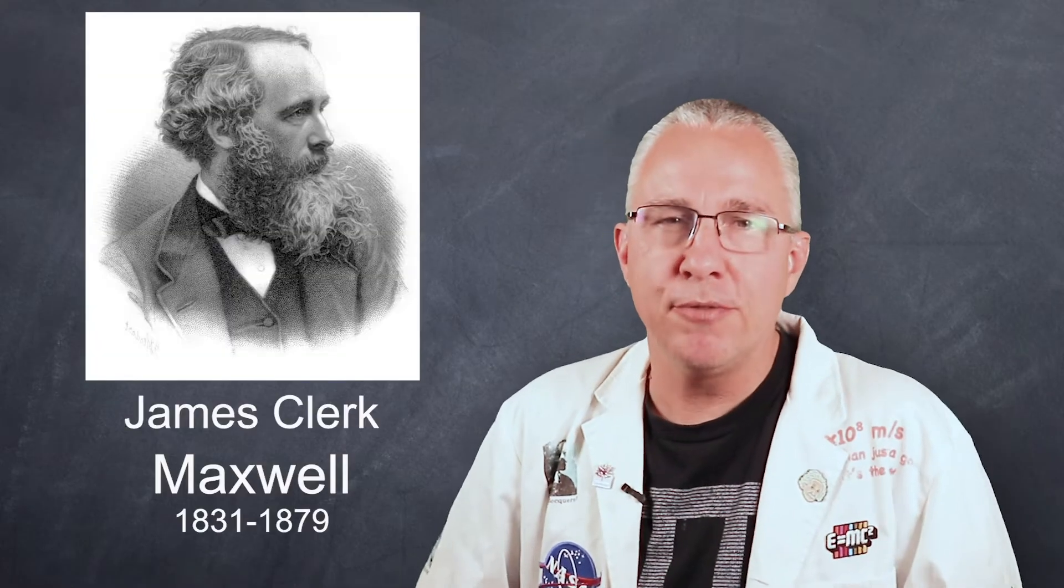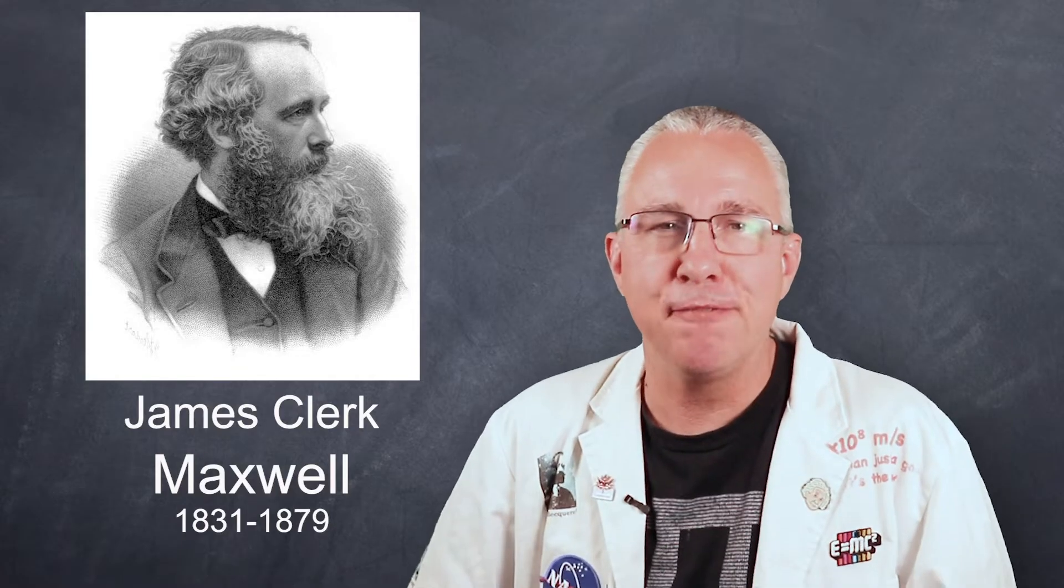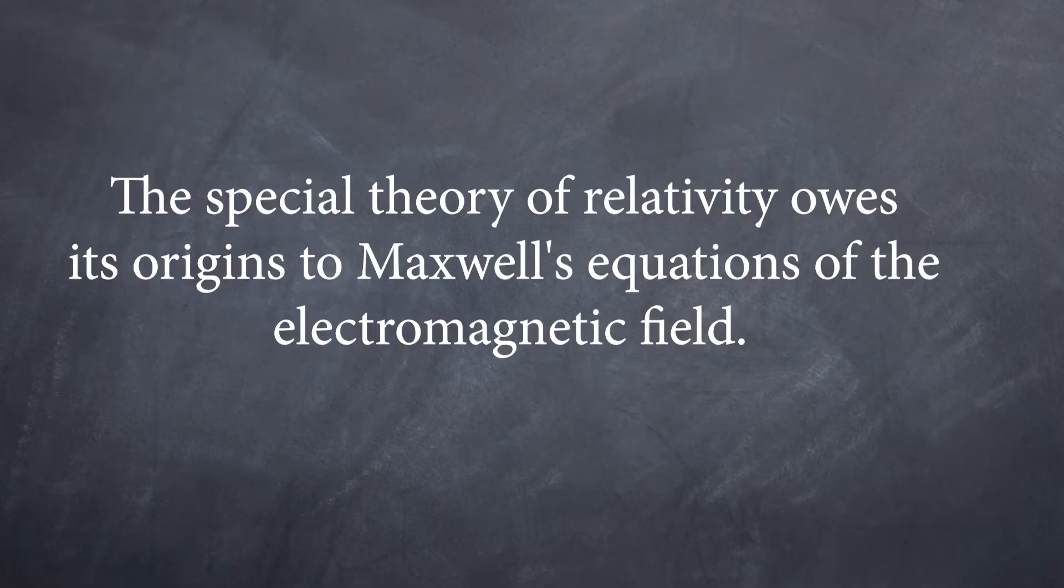James Clerk Maxwell is often referred to as Scotland's own Einstein. In fact, Einstein once said the special theory of relativity owes its origins to Maxwell's equations and the electromagnetic field. And Einstein had a picture of Maxwell hanging on his office.